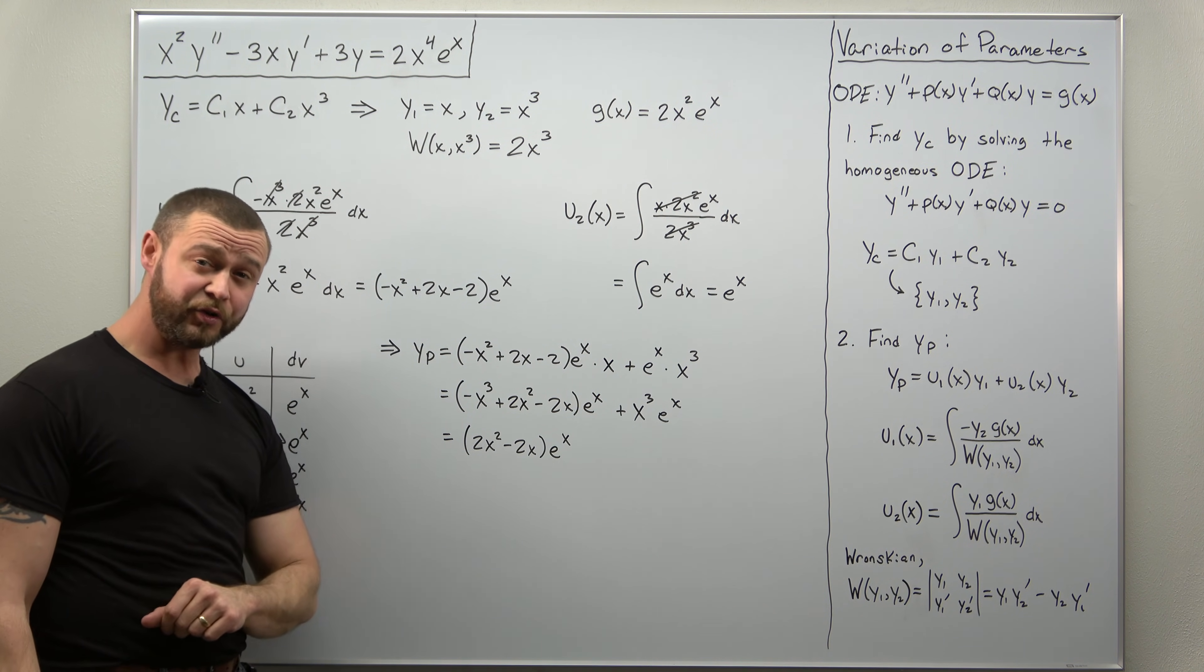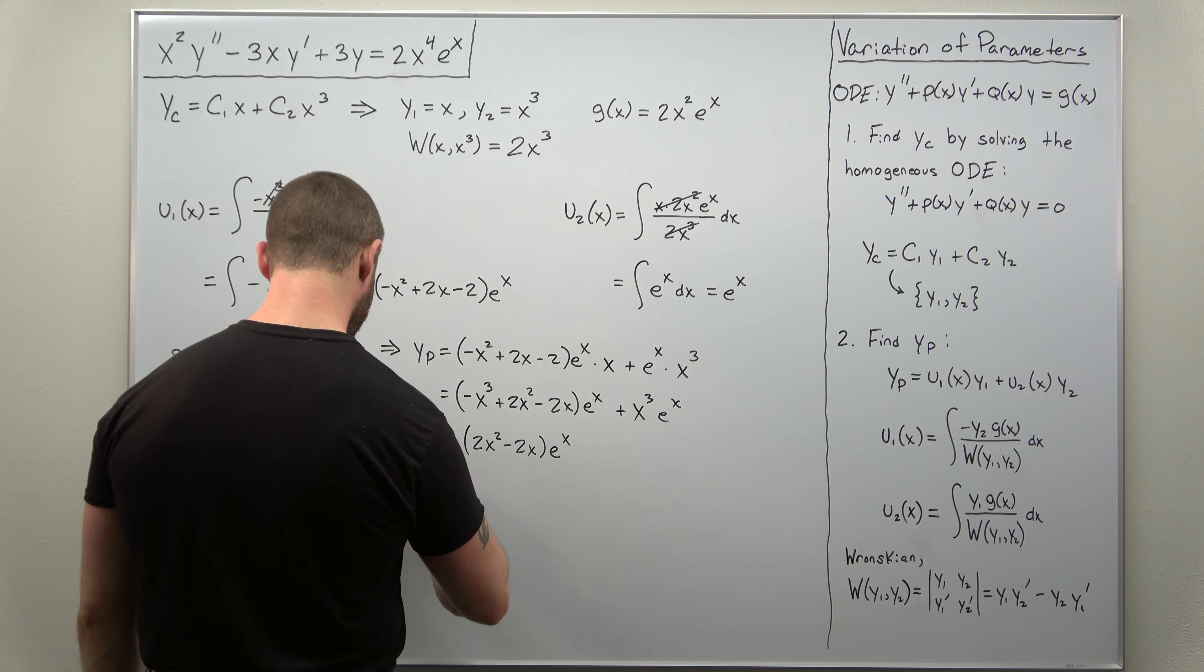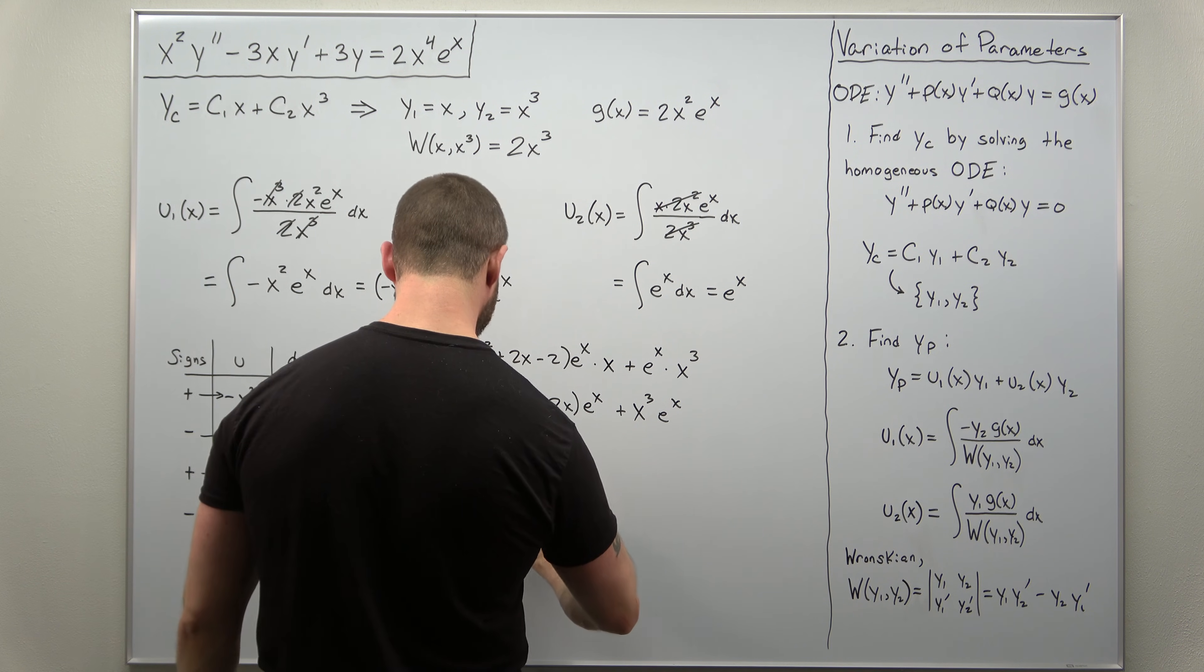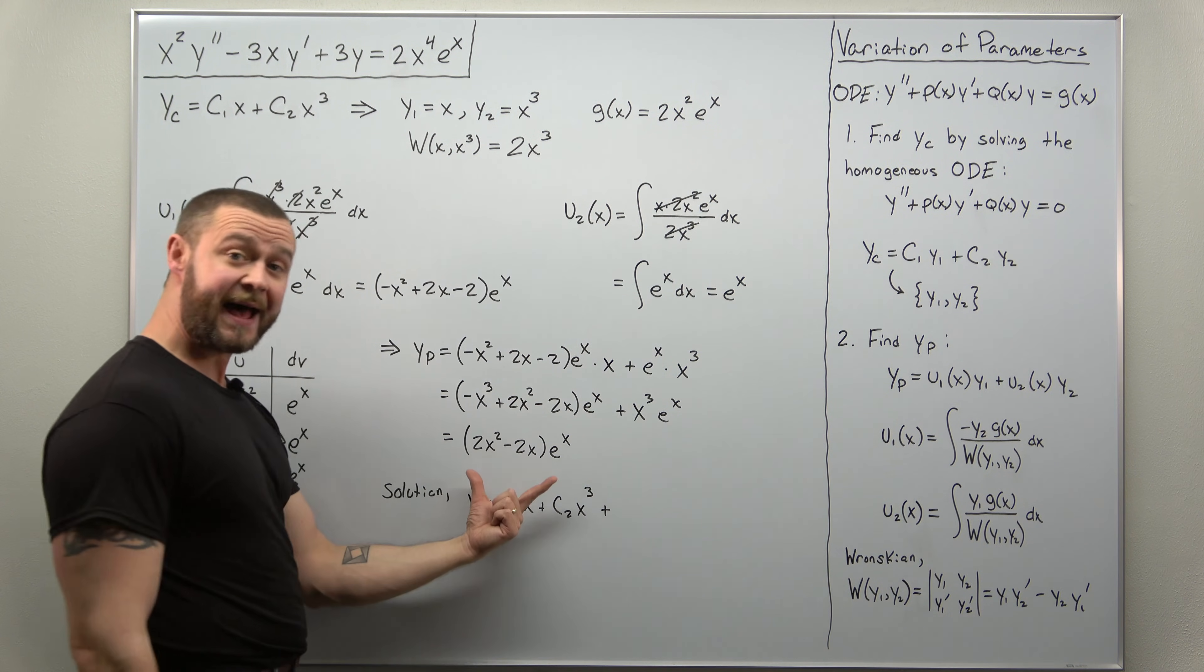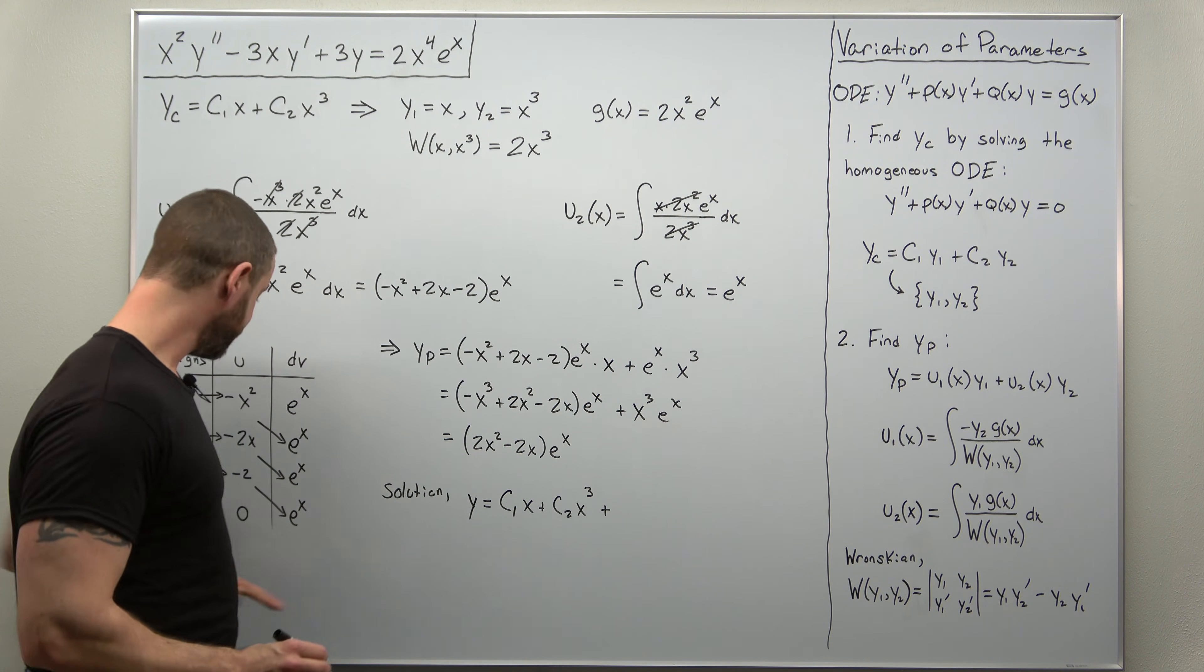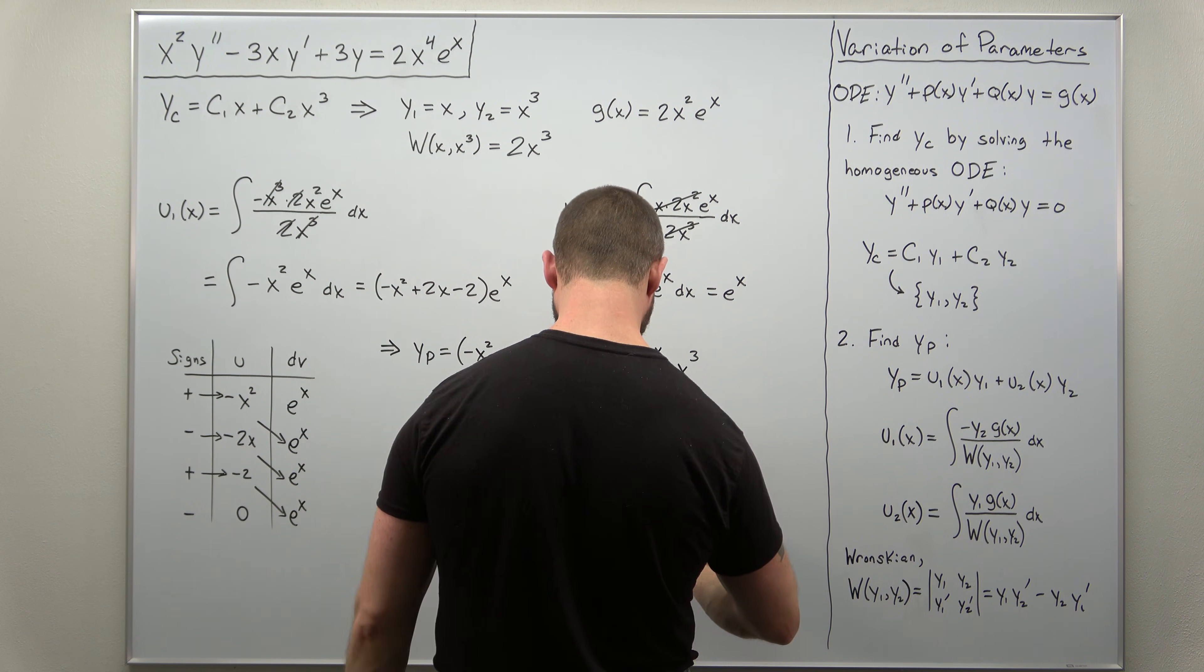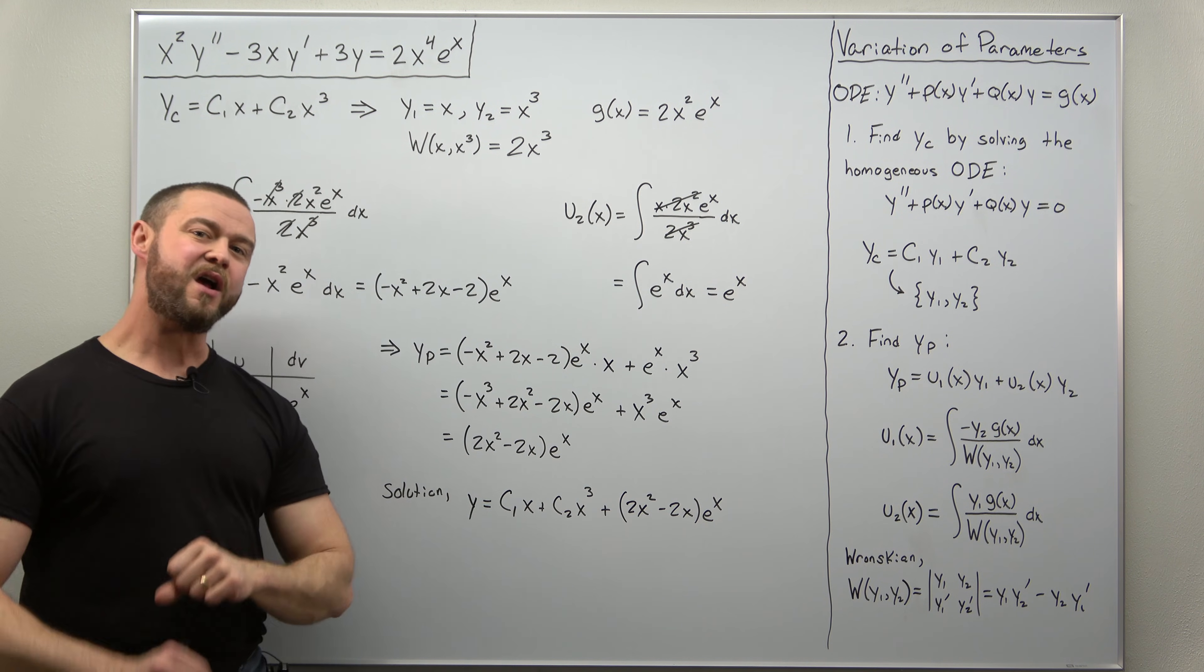As soon as you find your particular solution, always write down the full solution. The complementary solution plus the particular solution. Makes you feel like you've accomplished something writing down the solution. So we get our full solution here. The complementary solution is C1X plus C2X cubed. And then we add to that the particular solution, which we just found using the method of variation of parameters. It's actually pretty nice here. Once you incorporate tricks like this with the tabular method, these integrals usually aren't that bad if you know some shortcuts. So add your particular solution. 2X squared minus 2X times E to the X. And we are done.